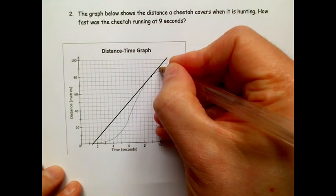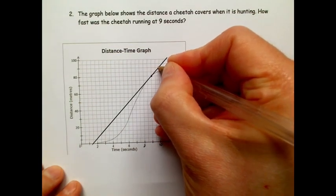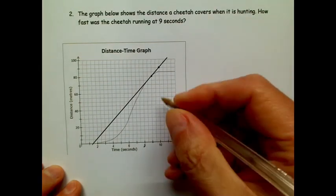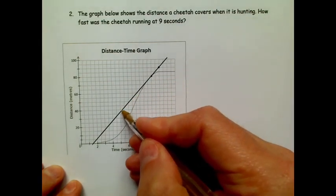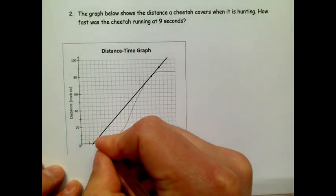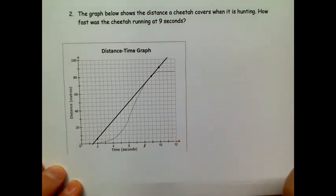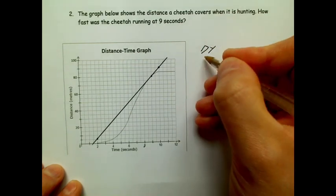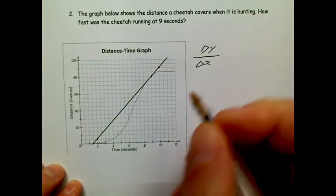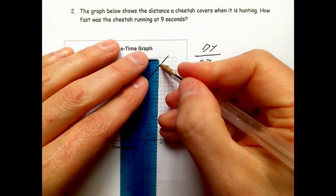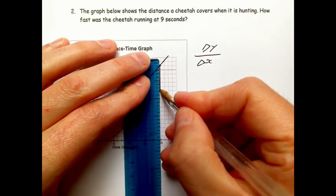So what I'm going to do now is I'm going to pick two points which are going to be really easy in order to get the numbers for. So this point here crosses some nice easy numbers, and then let's find another nice easy point here.